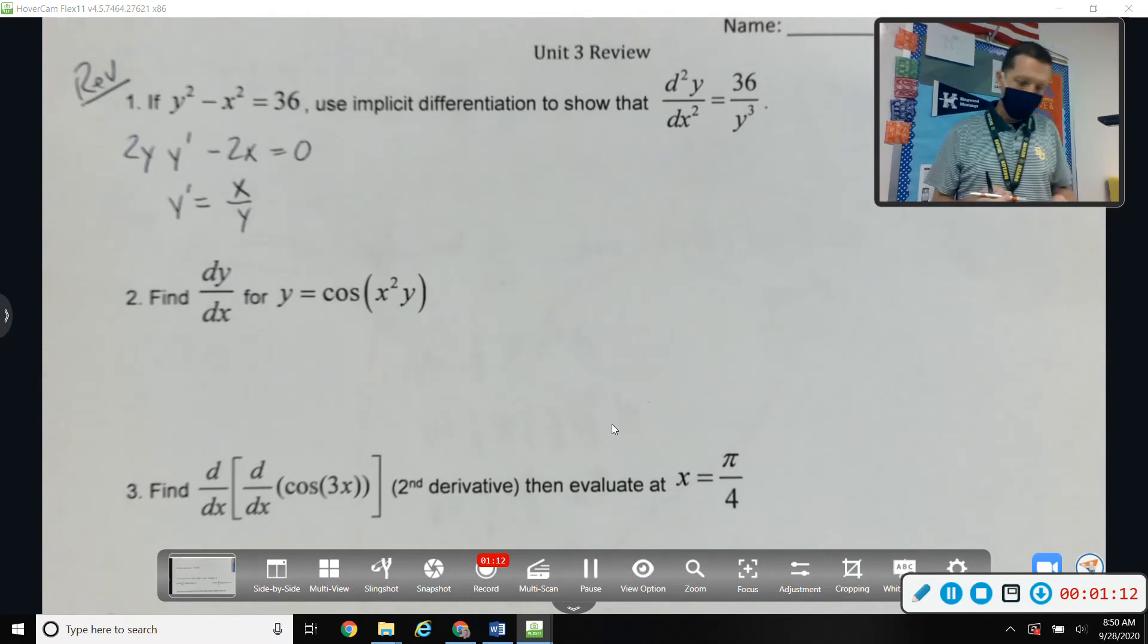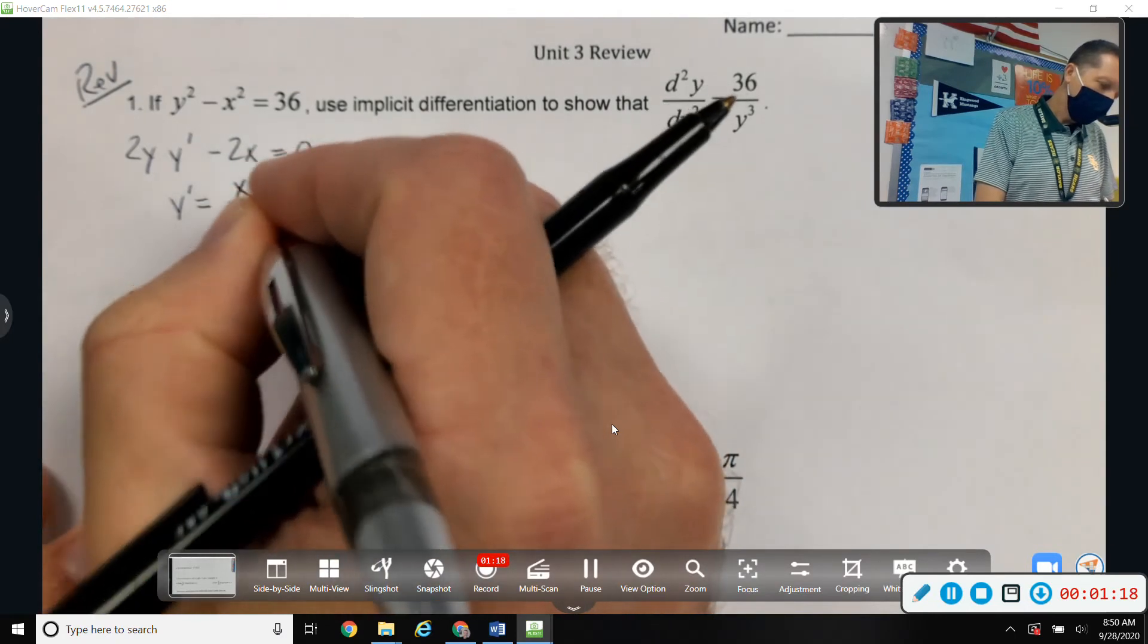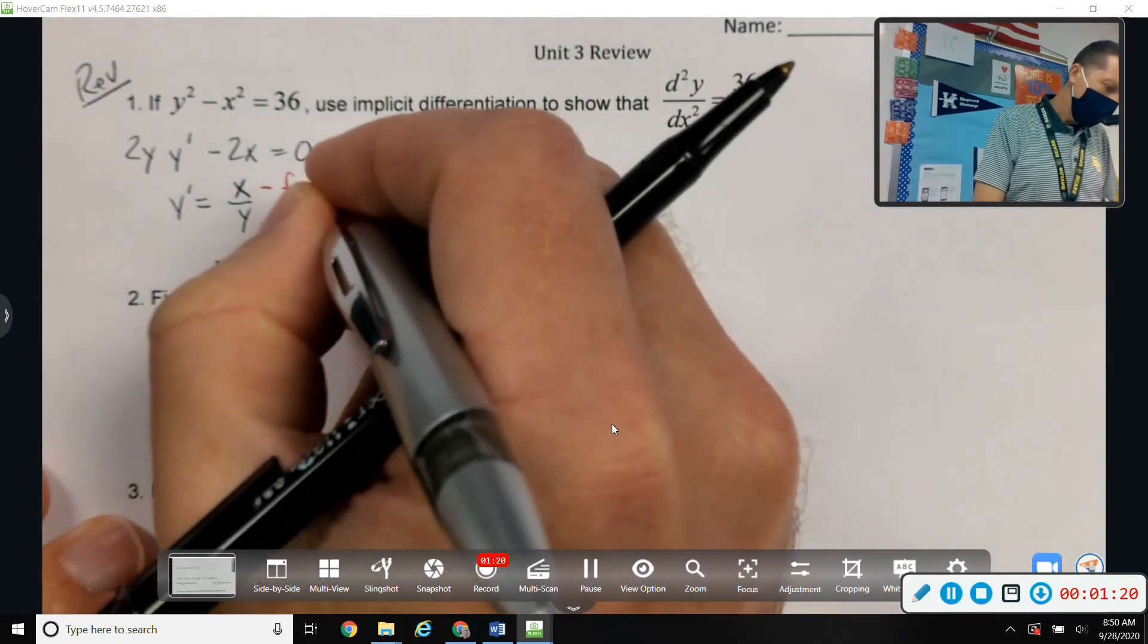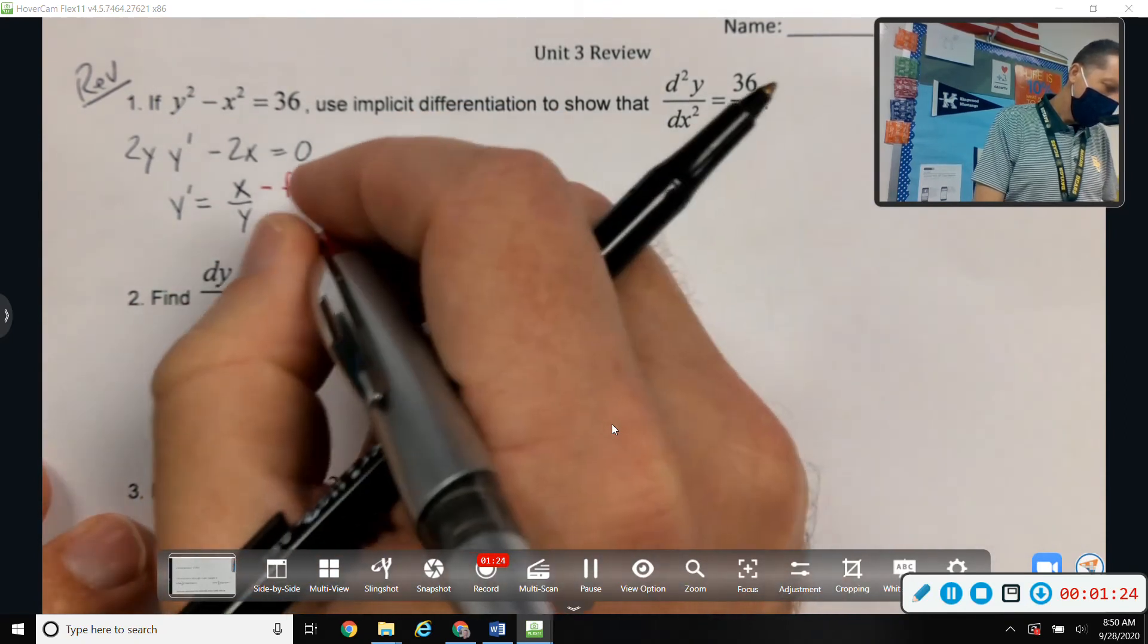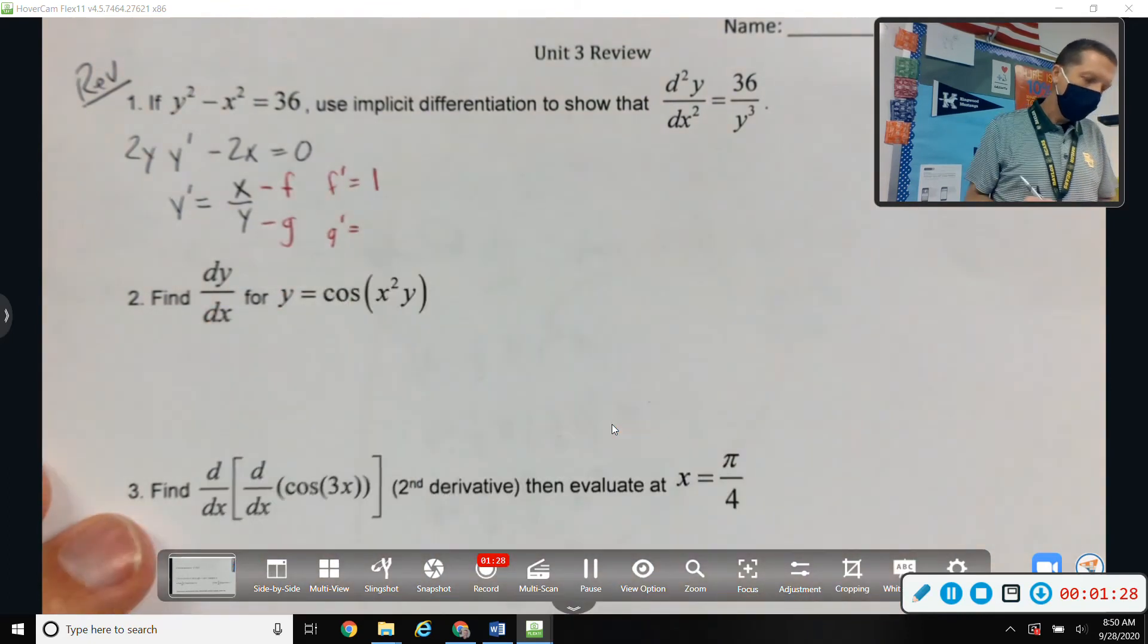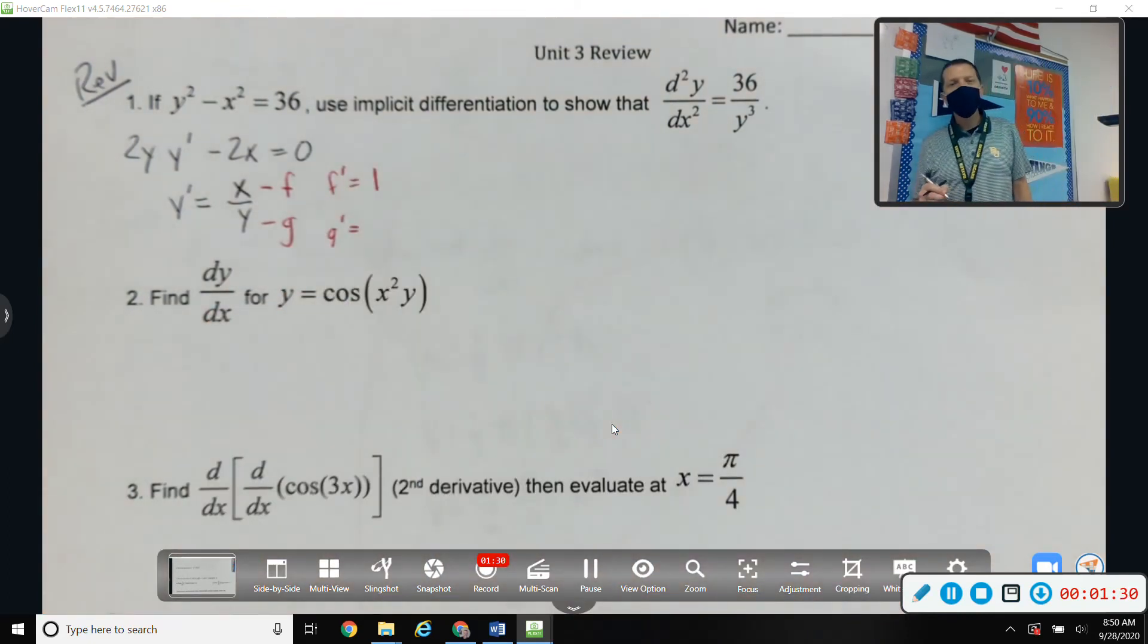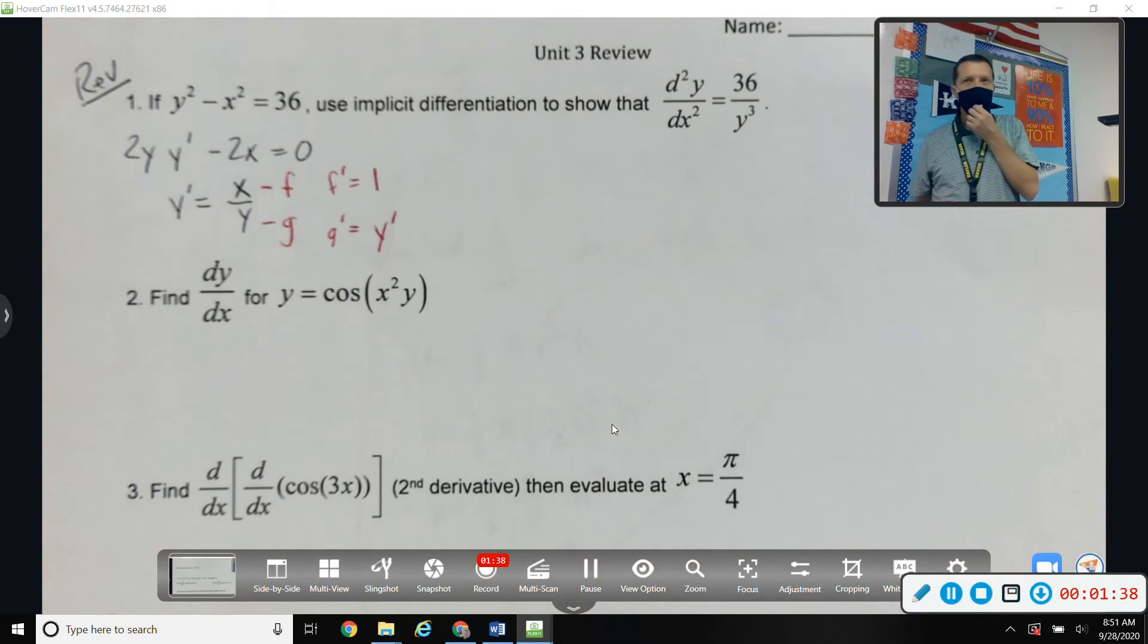Second derivative though, if I'm going to take another derivative of that, what rule will I have to use? Quotient rule. So f is x, so f' is 1. g is y, so what's g' equal to? y'. Okay, not just 1, but 1*y'. That's the chain rule going on.